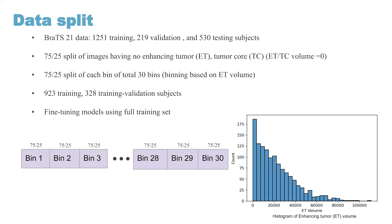Since we have varying tumor sizes and volumes, we employed binning of subjects based on enhancing tumor volume using 30 bins. From each bin, we took 75% of subjects for our own training validation set, resulting in 923 subjects for our training set and 328 subjects for our training validation set. We then trained our model using this single split.